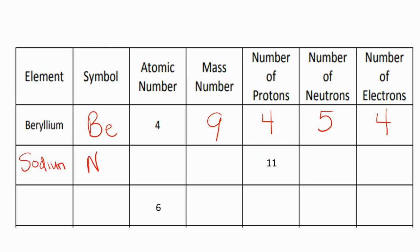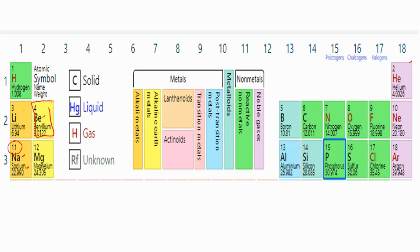And the symbol is a capital N and a lowercase a. The atomic number is 11 because it has to match the number of protons. Let's go back and look at the mass number.